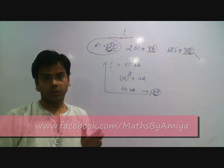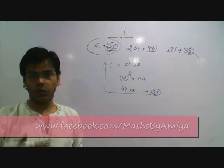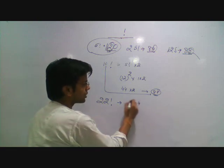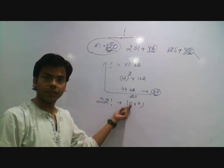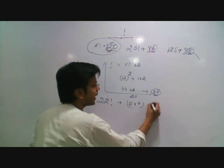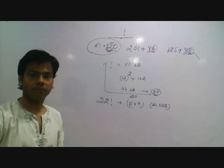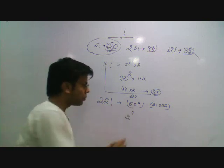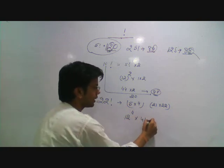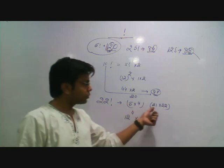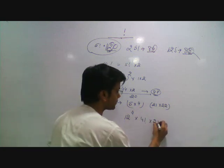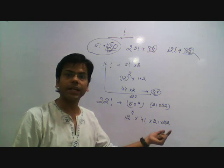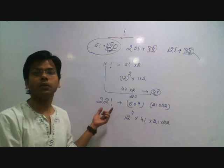For the last 2 non-zero digits of 22 factorial: 22 has 4 bundles of 5, so we work till 20 factorial with extra 21 and 22. For the bundle of 5, we have 12 raised to power 4. For the 4 bundles we have 1 into 2 into 3 into 4, that is 4 factorial. For the extra, we take complete 21 and 22 — not just unit digits. We calculate the last 2 digits of every component and multiply to get the last 2 non-zero digits of 22 factorial.